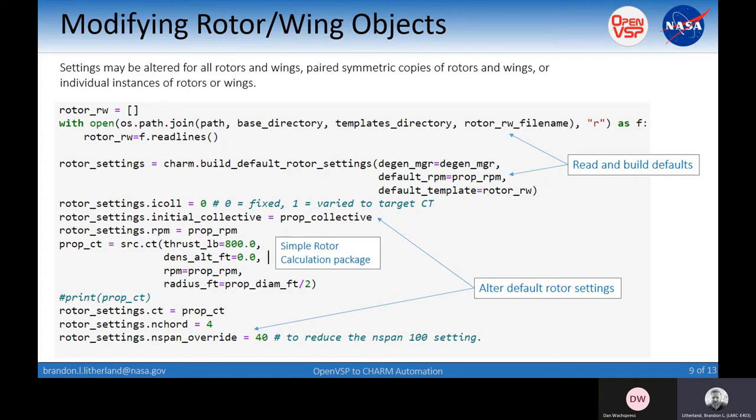We're specifying thrust, altitude, and using the RPM and the radius, it gives us the thrust coefficient that we need. Down here at the bottom, we're altering that lattice, giving it four chordwise and 40 spanwise sections.